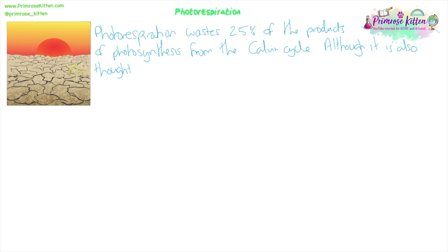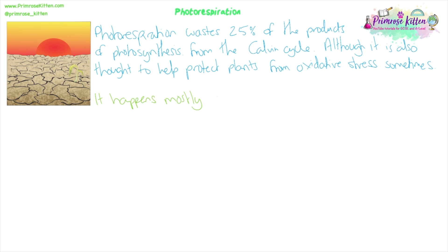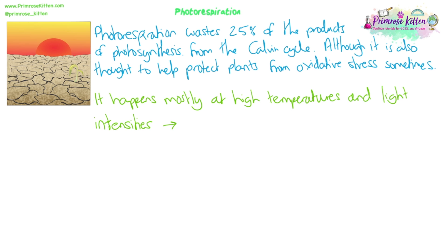When do plants do photorespiration? It happens mostly at high temperatures and high light intensities — for example, somewhere very dry with high light intensity. In these conditions, plants have to close their stomata to stop water loss in order to survive. But this prevents gas exchange, reducing the amount of carbon dioxide they can take in, and causes oxygen to build up in the cells. Because oxygen is still being produced from photolysis but can't diffuse out through the closed stomata, photorespiration is likely to take place.